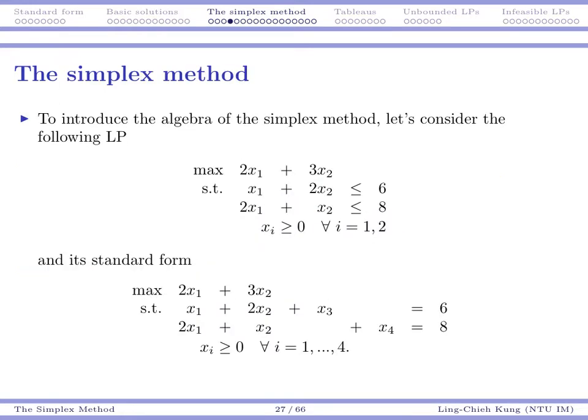Suppose we have this particular example. Maximize 2X1 plus 3X2 subject to X1 plus 2X2 less than or equal to 6, and 2X1 plus X2 less than or equal to 8, and both variables should be non-negative. You may draw a graph to see the solution, but now we want to use pure algebra. First, let's convert it to a standard form. We add X3 and X4 to make them equality. Simple. And now we have four variables.